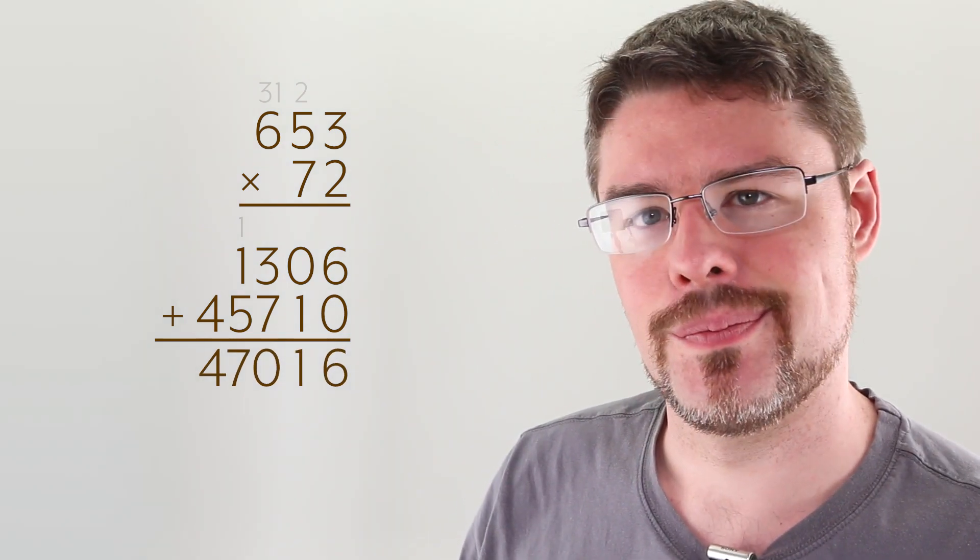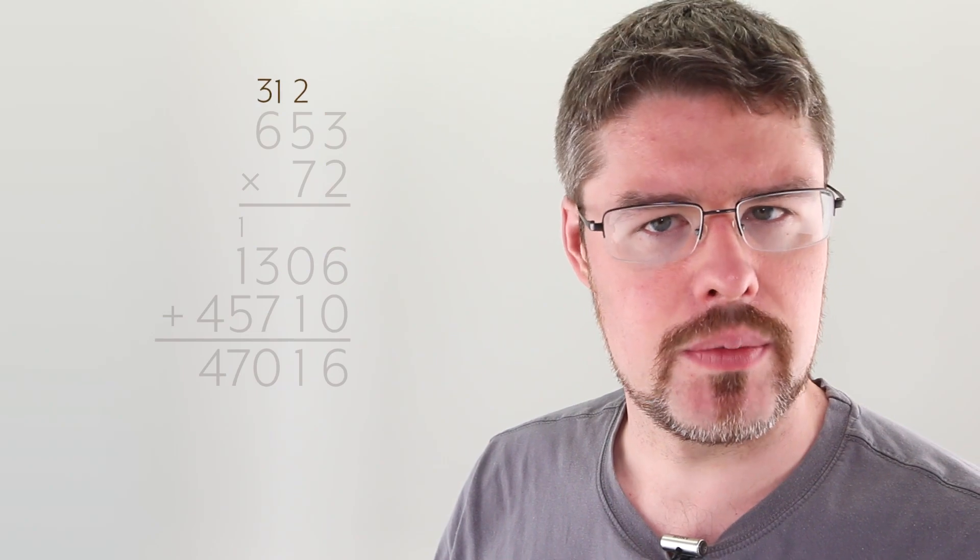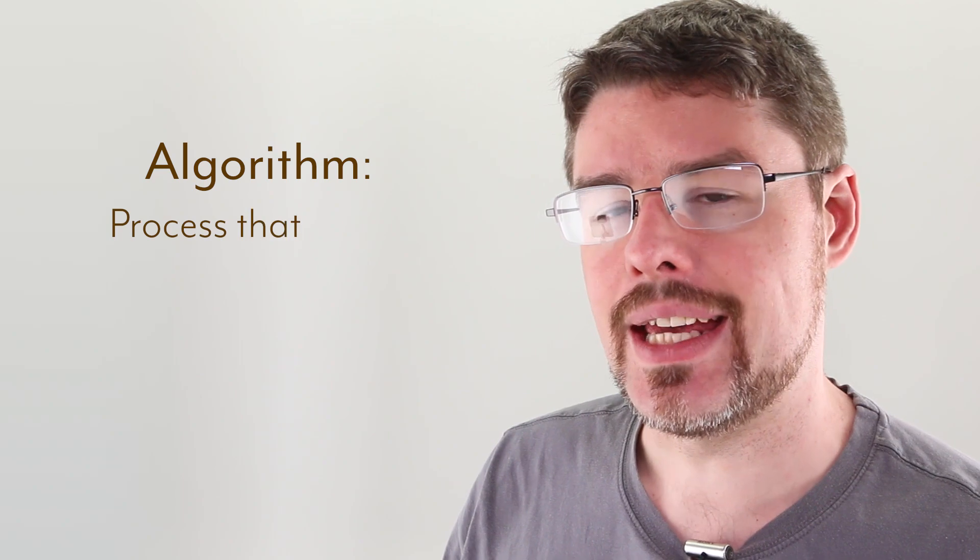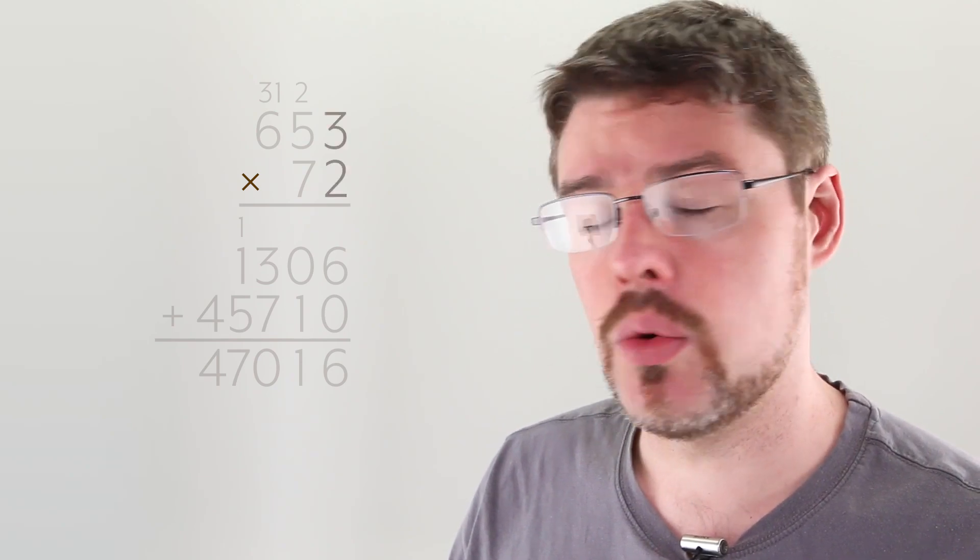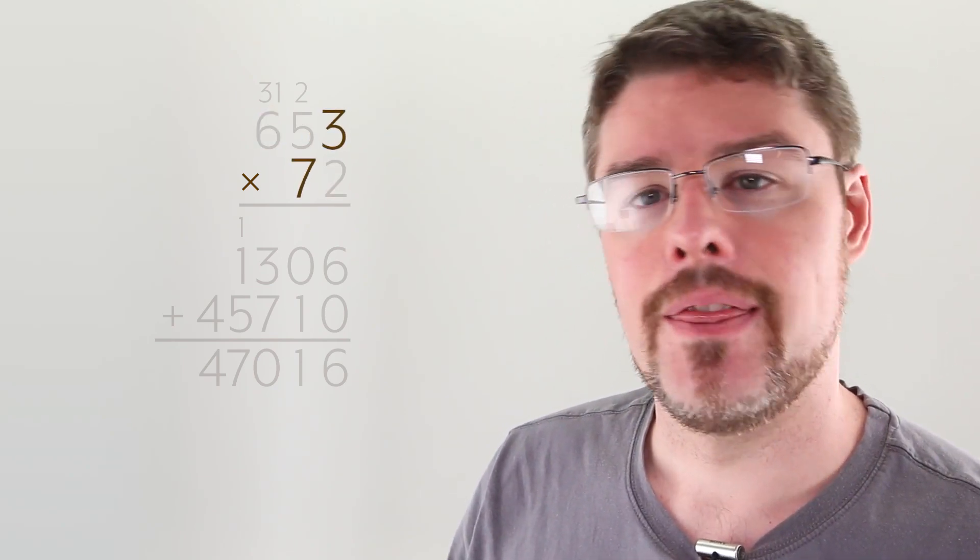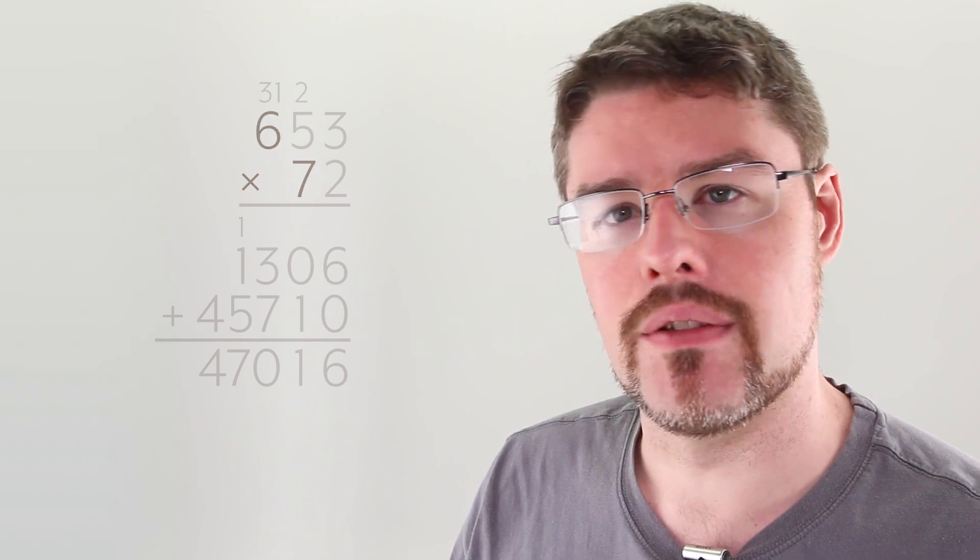But why does it work? When we carried all of those numbers and added the 0 to the second line, we were really executing an algorithm that kept track very cleverly of the place value of these numbers, so that when we went to multiply the numbers, all we were ever multiplying were two single-digit numbers. That's why I mentioned the life hack at the beginning of the video.